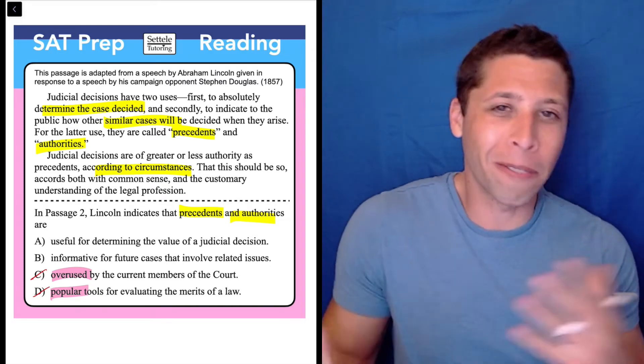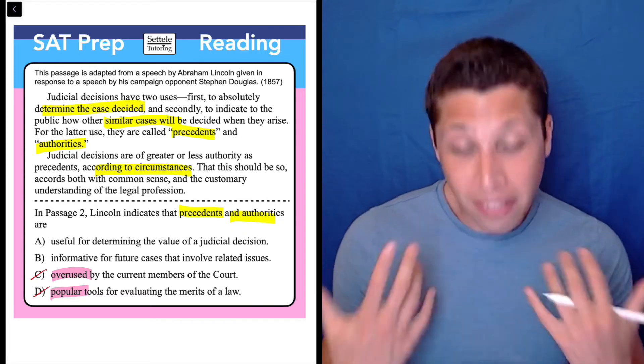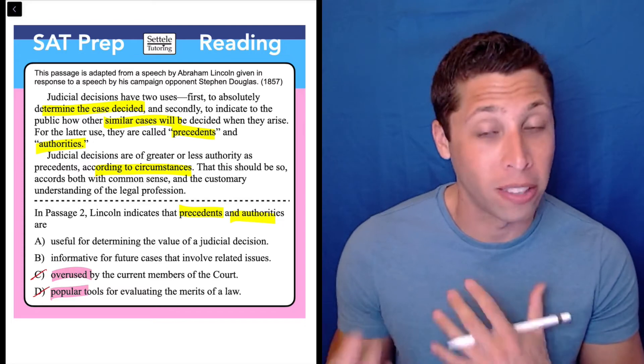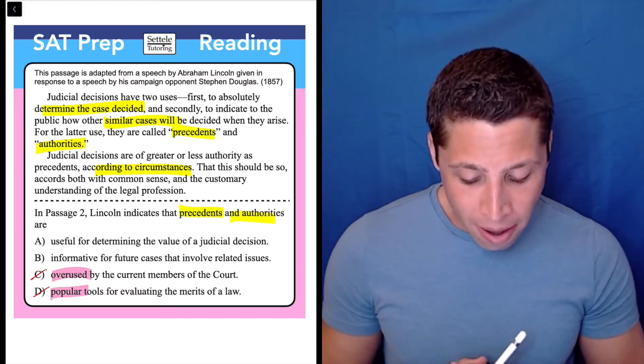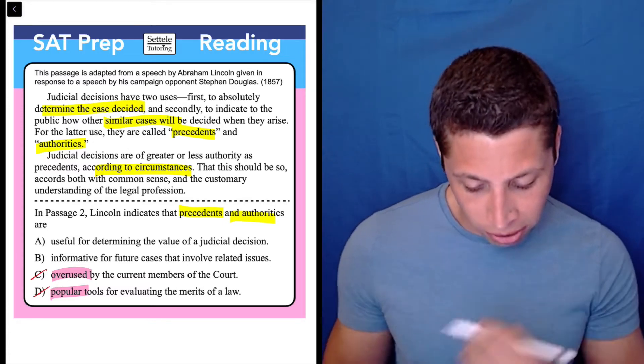The other two are tricky. They also feel very vague, and they seem like maybe they could fit. But let's take a look at the same kinds of things, the words within those choices, and see if we can match them with words in our lines. So in choice A, these precedents and authorities are useful for determining the value of a judicial decision.